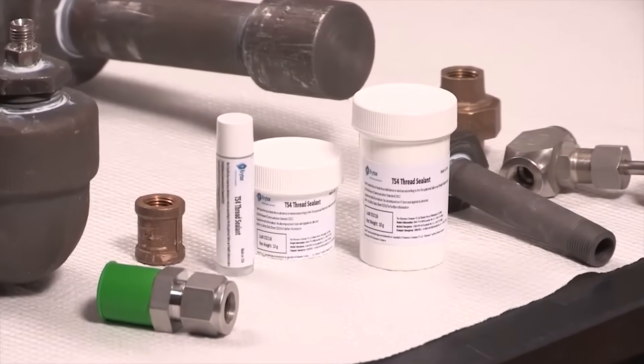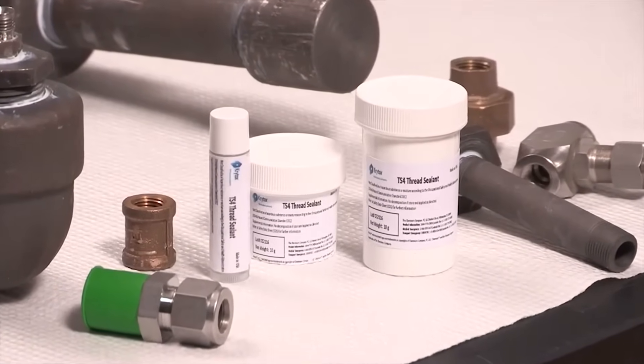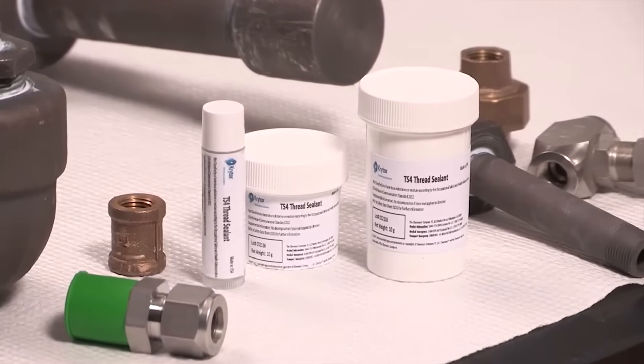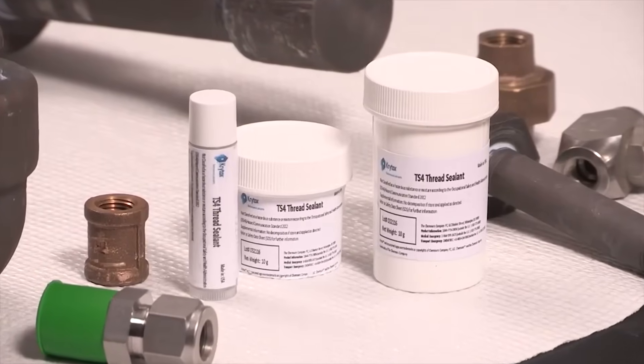Krytox is commonly thought of as a lubricant for bearings and mechanical devices. The question was posed, could Krytox be used to seal threads of a pipe? The short answer is yes.